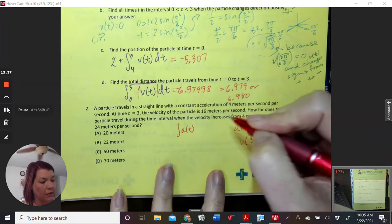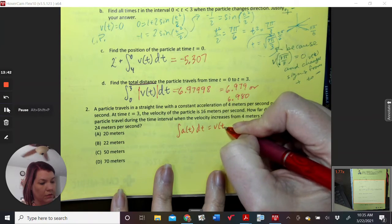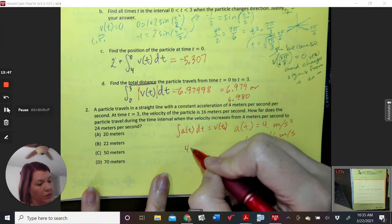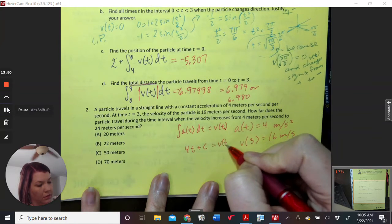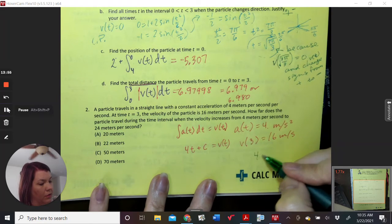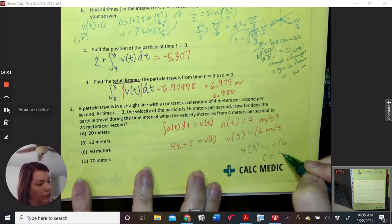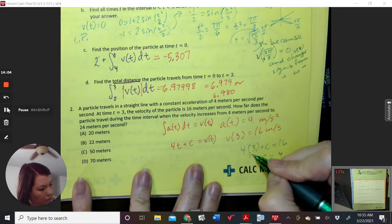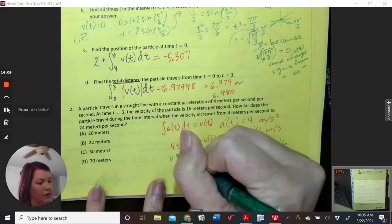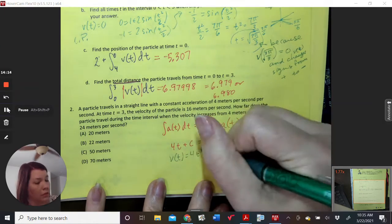So we know that the integral of A of t, dt is equal to V of t. So let's figure that out. So the integral of that is going to be 4t plus some c. Figuring out what c is, 4 times 3 plus c equals 16, so c equals 4, so this is 12, so c is 4, and so V of t equals 4t plus 4.